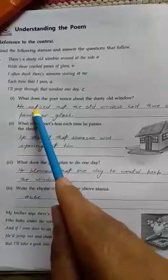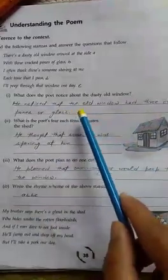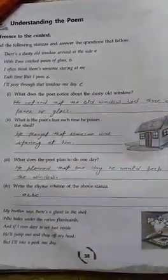Question number one: what does the poet notice about the dusty old window? That particular window had three panes of glass.